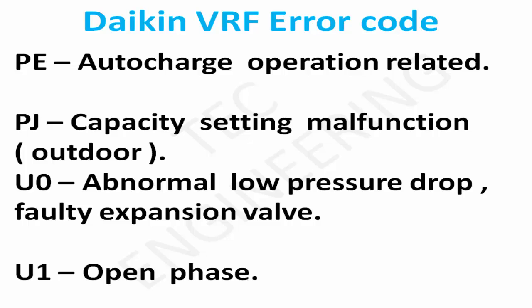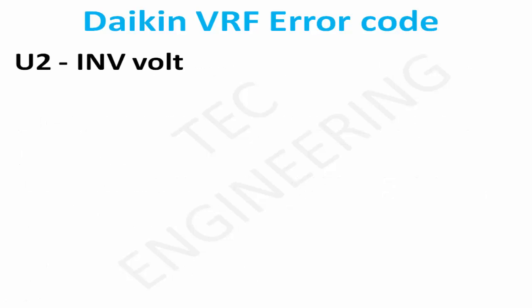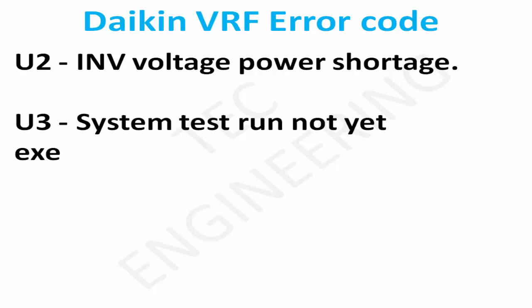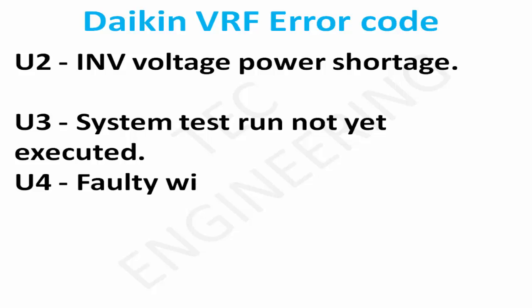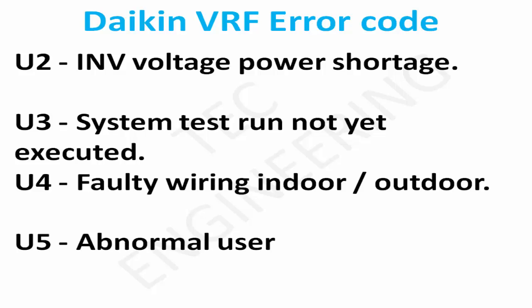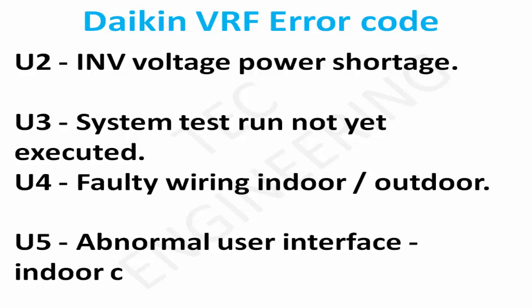PE: Auto charge operation related. PJ: Capacity setting malfunction, outdoor. U0: Abnormal low pressure drop, electronic expansion valve. U1: Open phase. U2: INV voltage power shortage. U3: System test run not yet executed. U4: Faulty wiring indoor-outdoor. U5: Abnormal user interface indoor communication.